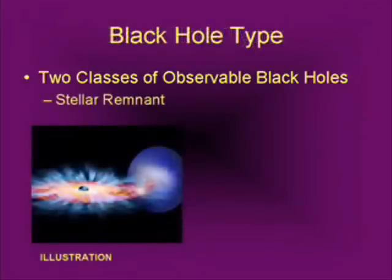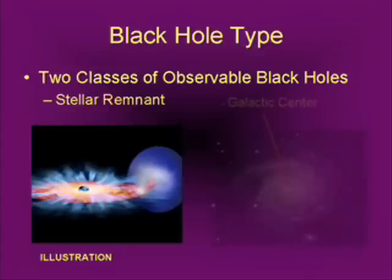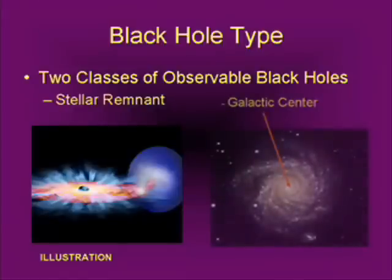Here's a pretty illustration of a stellar black hole that happens to be near another star. Many star systems are binaries. In this case, the black hole's gravitational field is pulling mass off the star. And the other example — our Milky Way is a very good example — is that in the galactic center, there is a black hole.